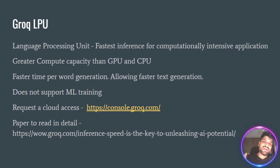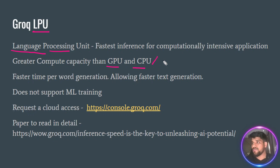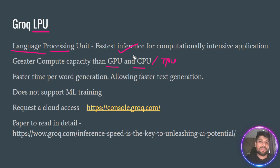The reason they are faster is because they provide the LPU — the Language Processing Unit. This is something they invented on their own, which is different from the GPU, CPU, and even the TPU provided by Google. One of the great things about the LPU is that it provides faster inference for computationally intensive applications.